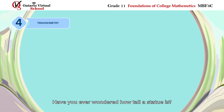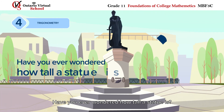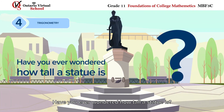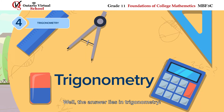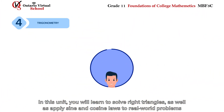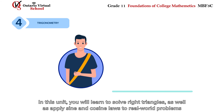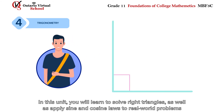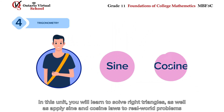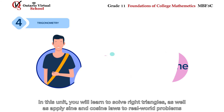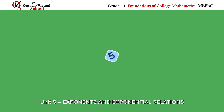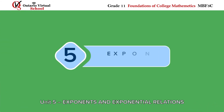Unit 4: Trigonometry. Have you ever wondered how tall a statue is? Well, the answer lies in trigonometry. In this unit, you will learn to solve right triangles as well as apply sine and cosine laws to real-world problems.